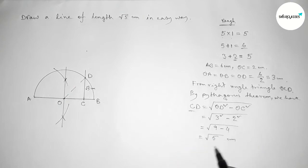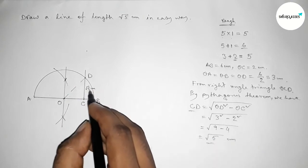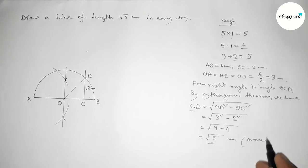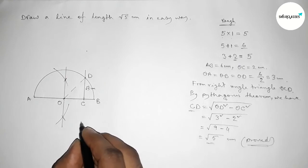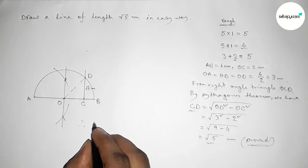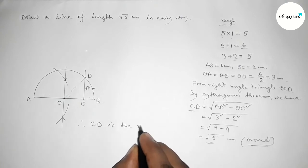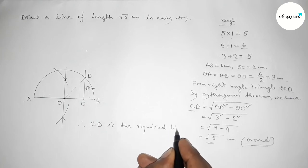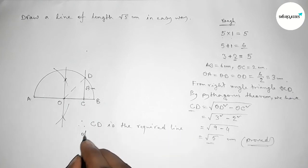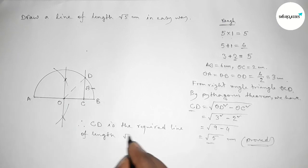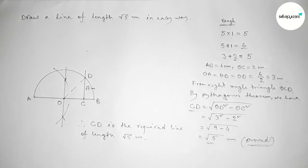So the length of CD equals root 5 centimeter. Therefore, CD is the required line of length root 5 centimeter. By this way you can draw a line of length root 5 centimeter in an easy way. Thanks for watching — if this video is helpful to you, please share it.